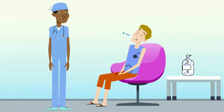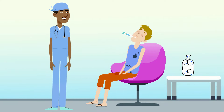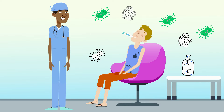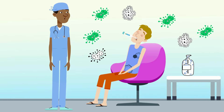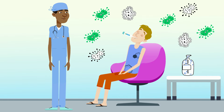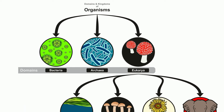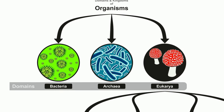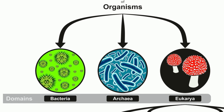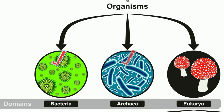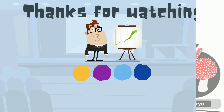Some diseases we know that we get are caused by a bacterial infection. As a result of these differences, and several others, modern classifications changed and a third domain was added. We now have three domains: bacteria, archaea, and eukarya.